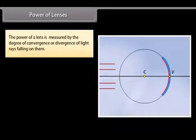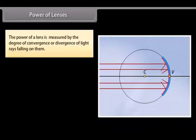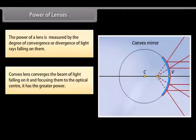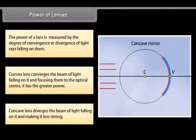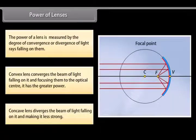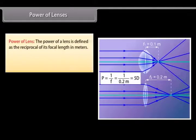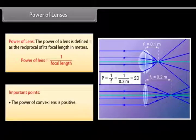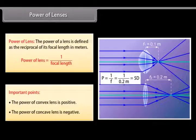Power of lenses: The power of a lens is measured by the degree of convergence or divergence of light rays falling on it. A convex lens converges the beam of light and has greater power. A concave lens diverges the beam of light. The power of a lens is defined as the reciprocal of its focal length in meters: P = 1/F. The power of a convex lens is positive; the power of a concave lens is negative.